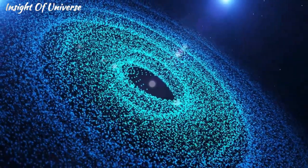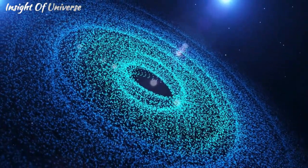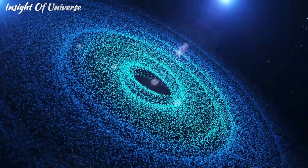If the pulsar exceeds this limit, the pressure of the neutrons in its interior is no longer sufficient to resist gravity, and it collapses into a black hole.